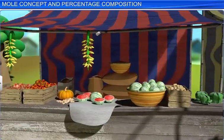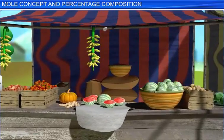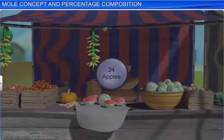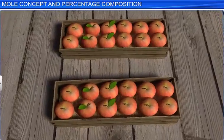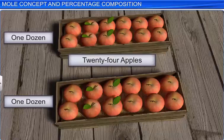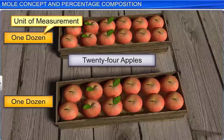Before we begin, let's step into a store to buy some apples. Let's say we need 24 apples. When we collect them, we get them in two boxes, with one dozen or 12 apples in each box. Here, dozen is a unit of measurement that helps us simplify and state a large quantity, like 12.